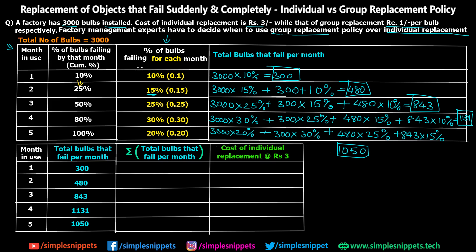We now create a summary table with months 1 through 5 and total bulbs failing per month: 300, 480, 843, 1131, and 1050. We then take the cumulative sum of total bulbs failing: month 1 = 300, month 2 = 780, month 3 = 1623, month 4 = 2754, month 5 = 3804.